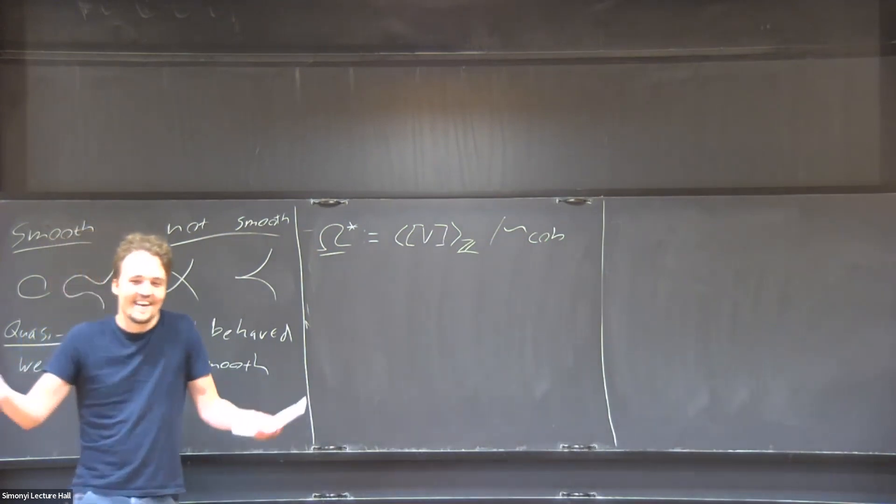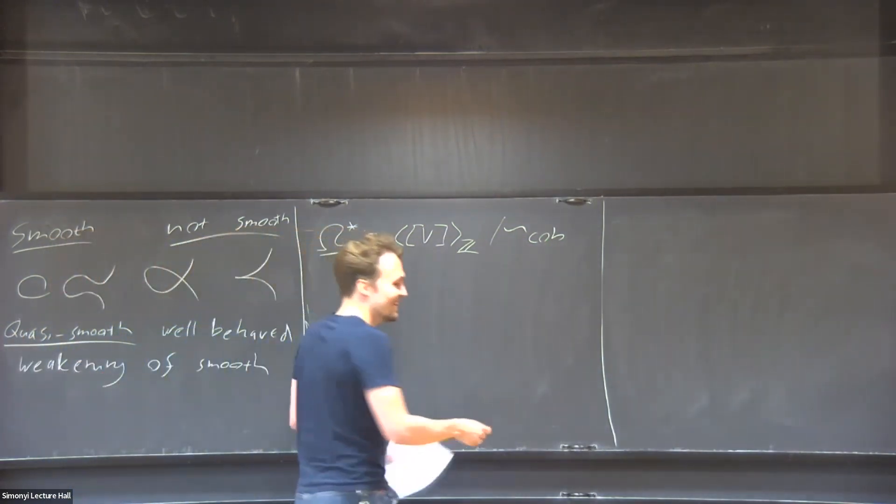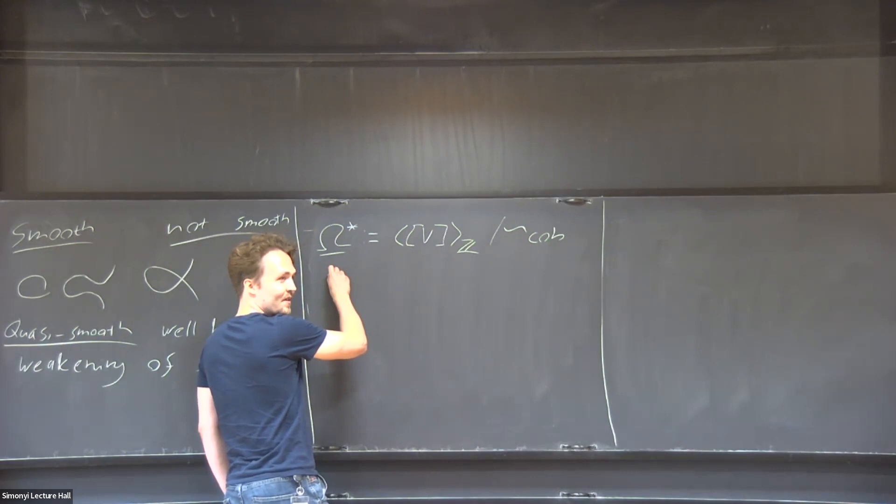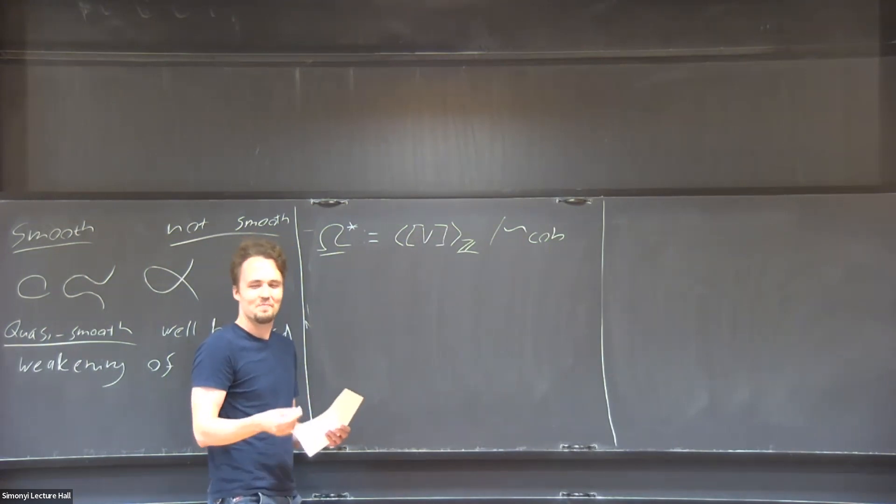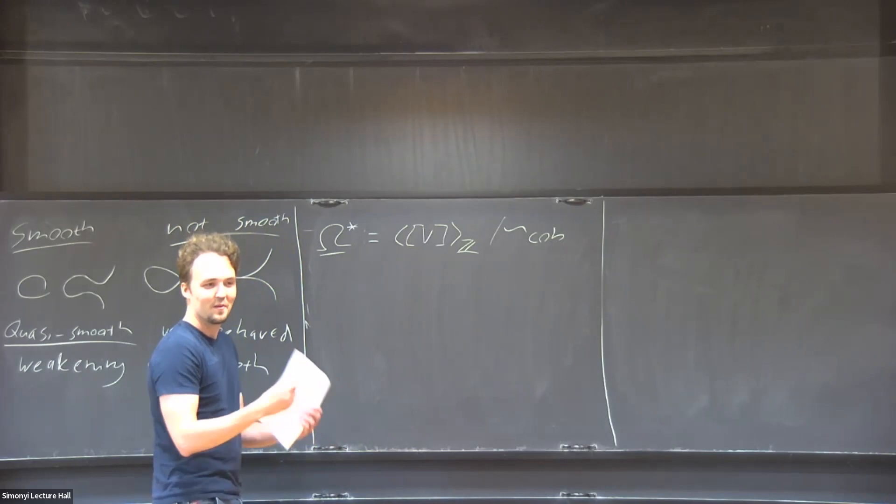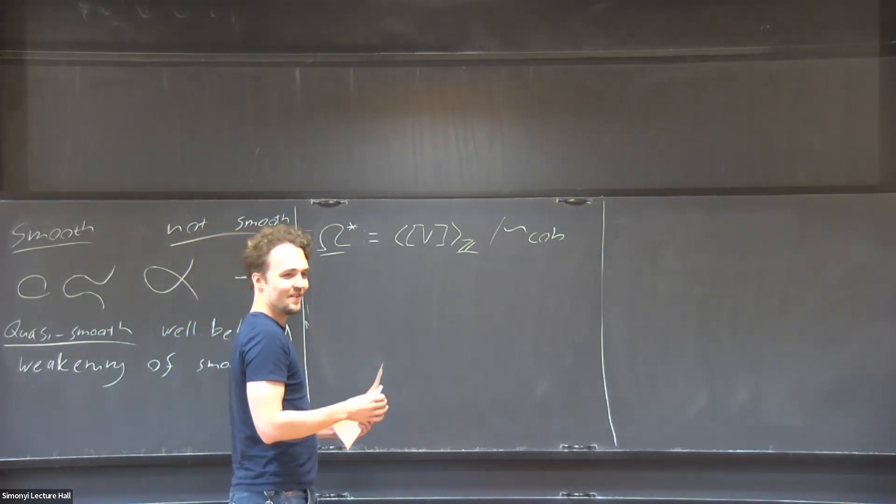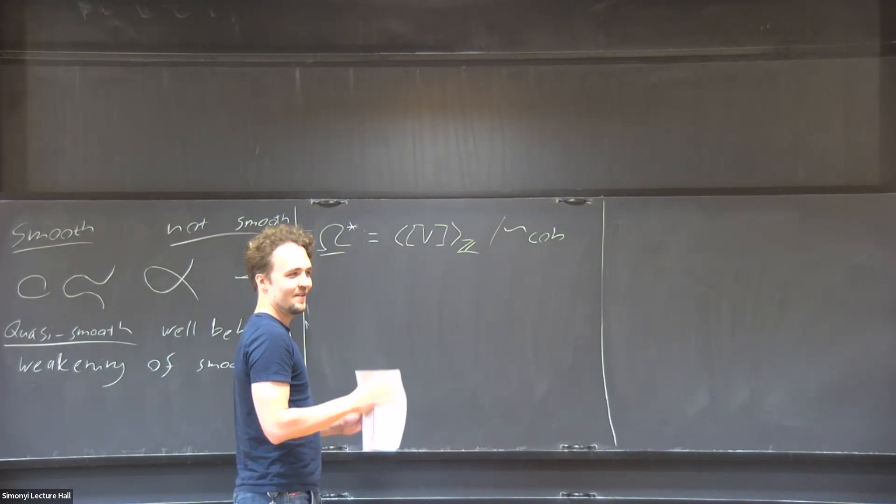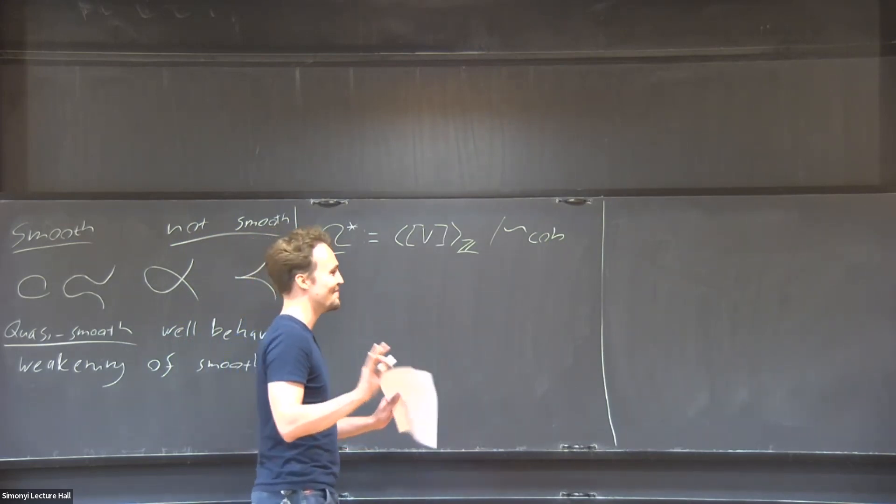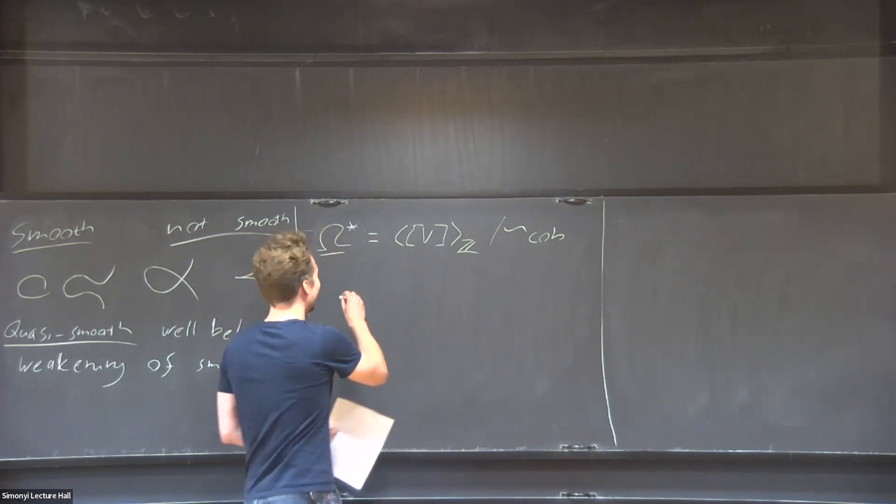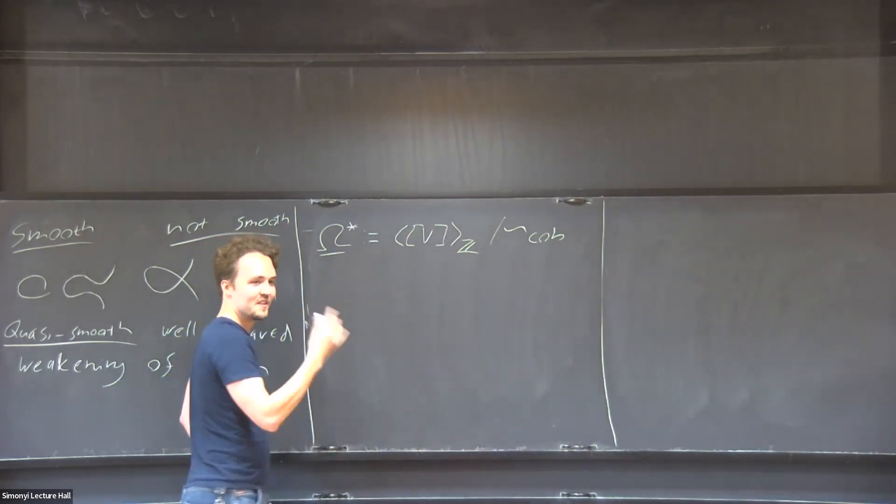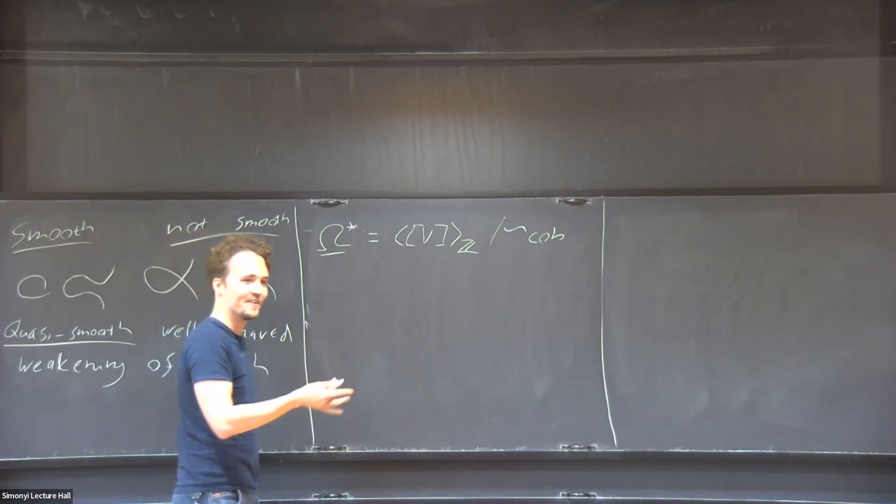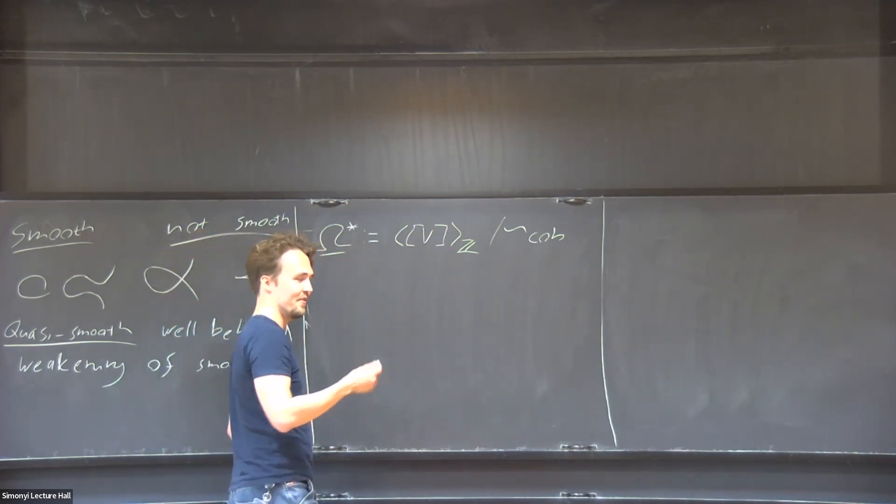Equivalence class is just the isomorphism. These are not schemes; they are derived schemes and they form an infinity category, so it's isomorphic in the categorical sense.